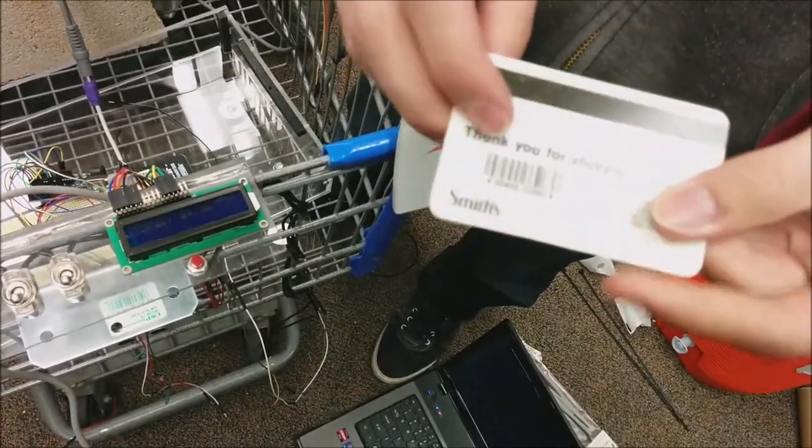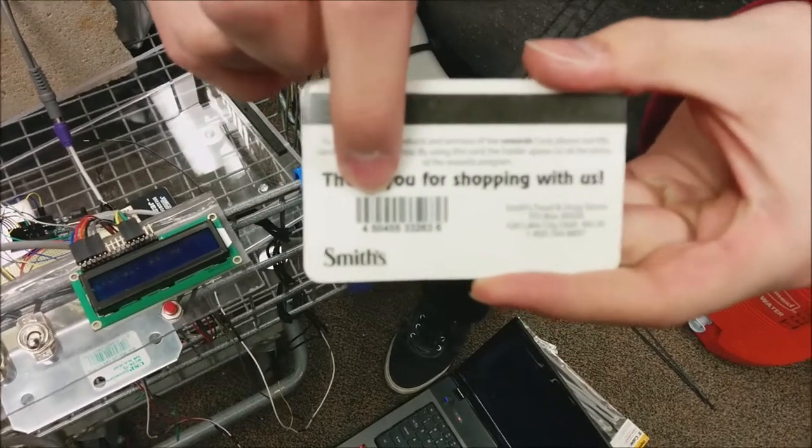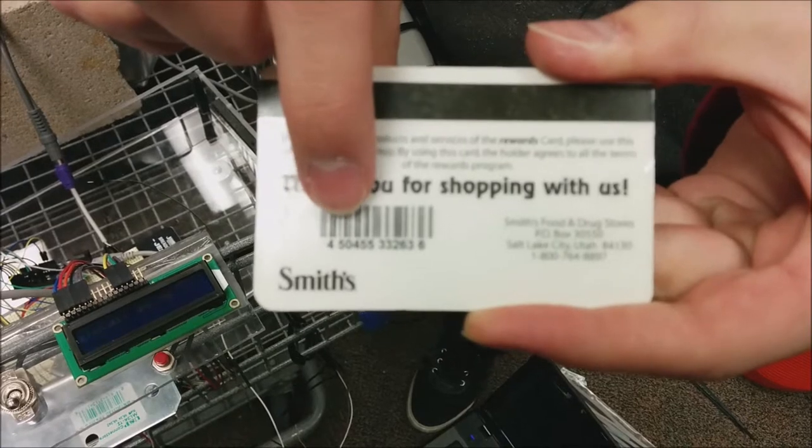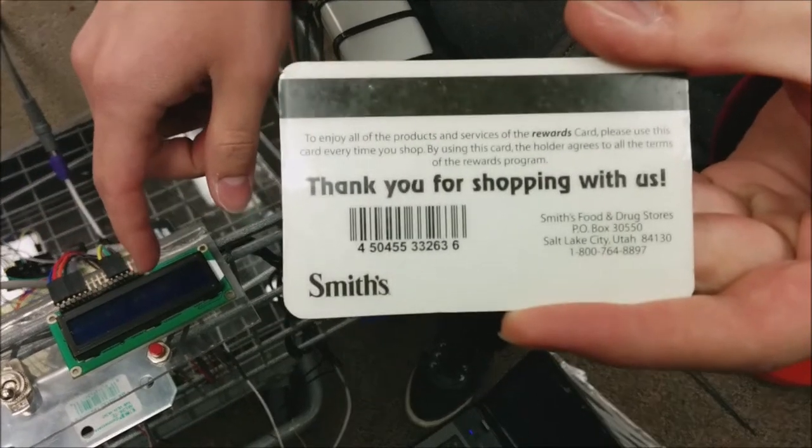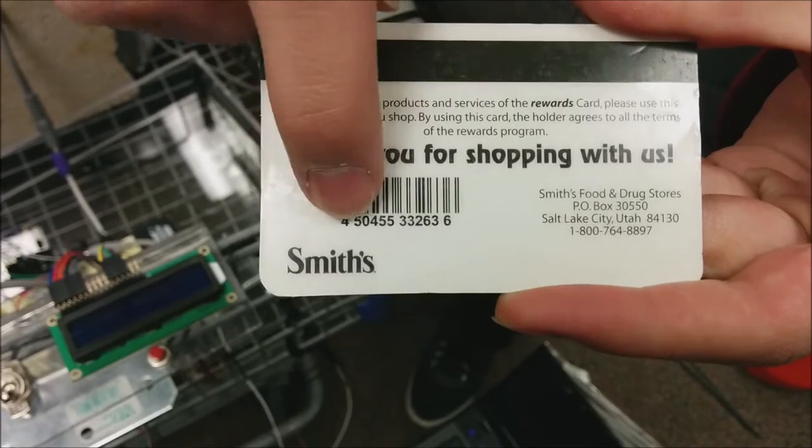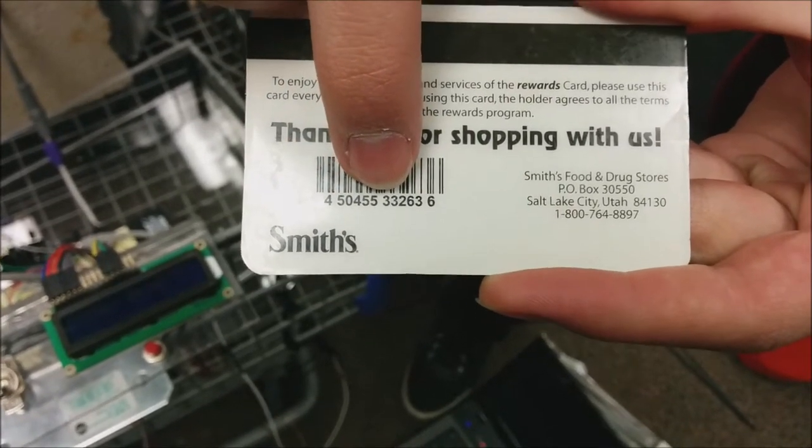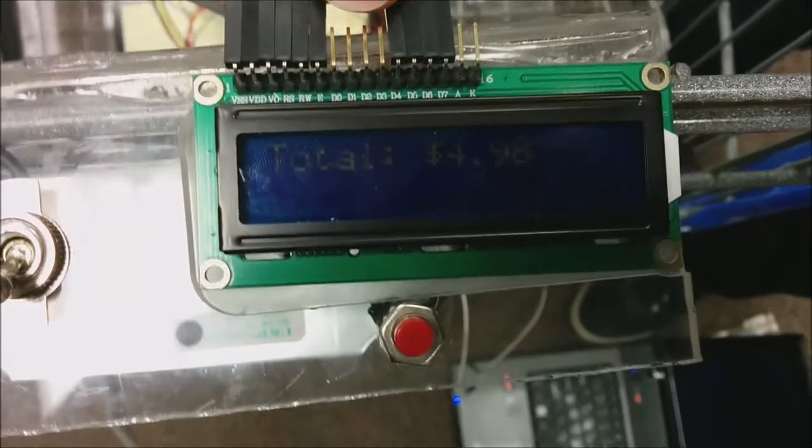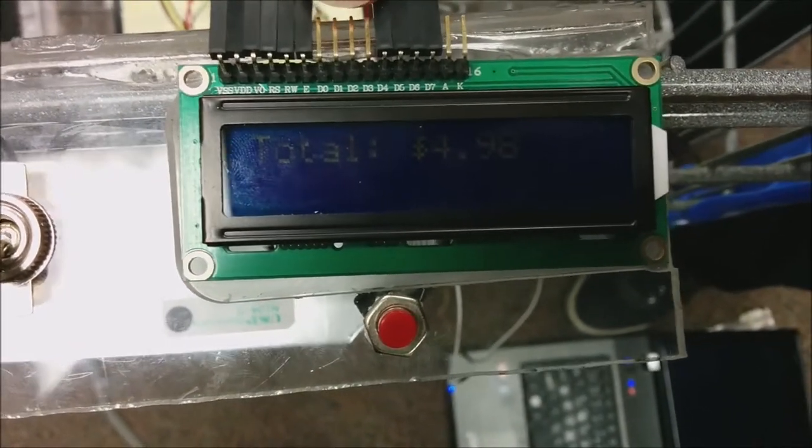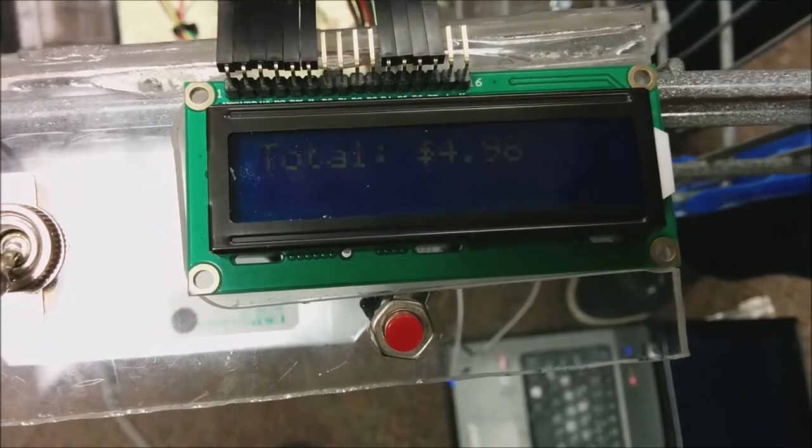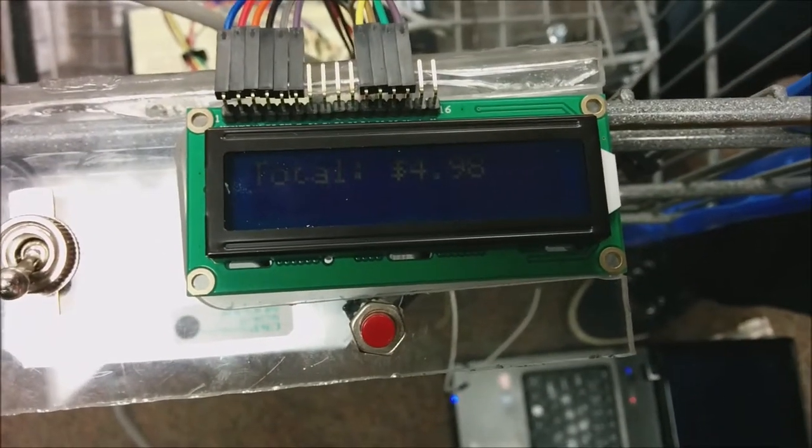When you scan an item that has an unknown barcode, we're going to be scanning the Smith's Rewards card. It'll say on this display unknown item and it'll give you the number right here. We've got 450455332636. When we scan it, it should just come up right on the display. There it is, and it won't add it to the total because it's an unknown item.